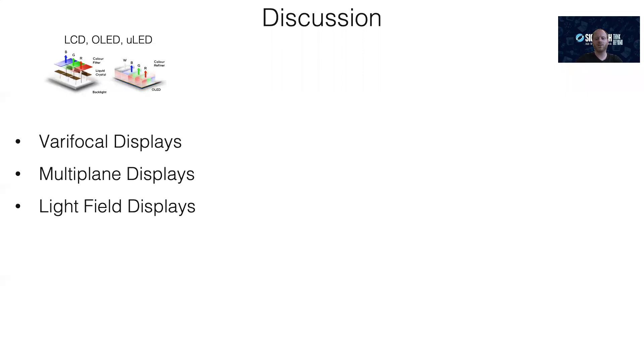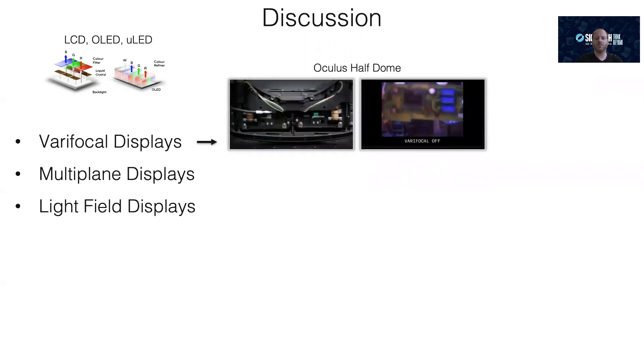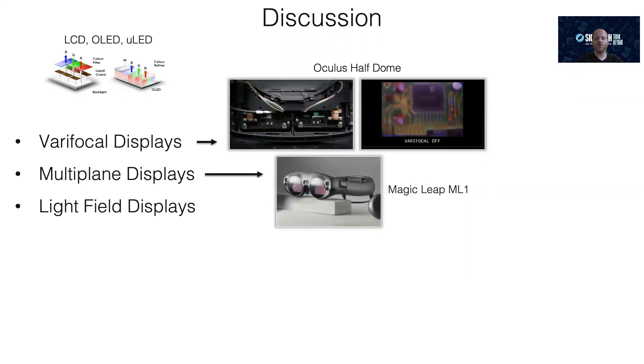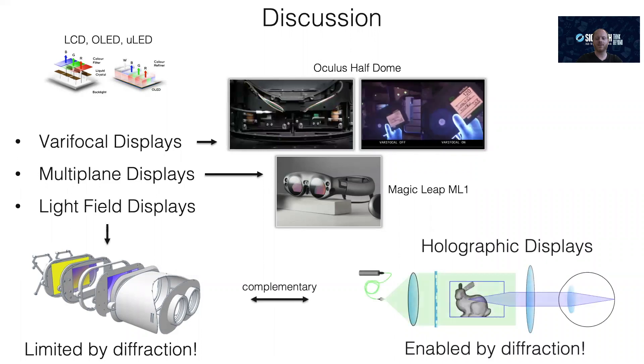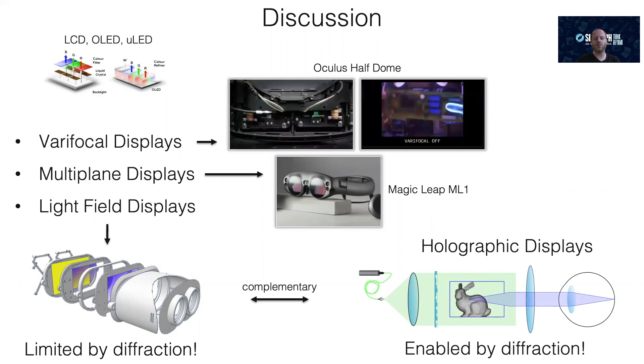Because other computational displays use well-established micro-display technology, it's really hard to beat them. Varifocal displays are already moving into industry prototypes and products. Multi-plane displays are also on the market. For example, Magic Leap's ML1 has two focal planes. And light-field displays are a really great idea, but their resolution is limited by diffraction. Holographic displays, on the other hand, are enabled by diffraction, yet it is difficult to get as high of an image quality as with other displays. So light-field and holographic displays and algorithms are probably the most interesting research direction here. And the main point I'm trying to make is that these are really complementary technologies.